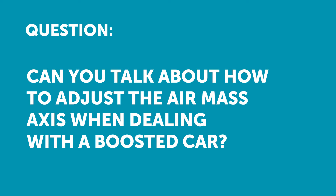Didriks asked: can you also talk about how to adjust the air mass axis when dealing with a boosted car? The air mass basically comes from our mass airflow sensor. The mass airflow sensor is telling the engine control module what mass of air is entering the cylinders, and that also becomes an axis for our ignition table — as we looked at already in the lesson, we had grams per cylinder in terms of airflow.